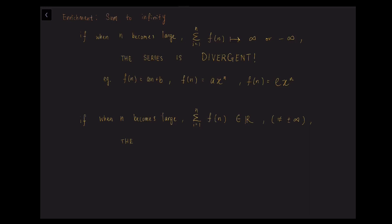On the other hand, if when n becomes large the summation gives a finite real number — not positive or negative infinity — then we conclude the series is convergent, as the numbers get smaller and smaller and sum to a finite value. For example, f(n) equals a over n plus b: as n increases, the a over n term decreases, eventually reaching a finite value. Similarly, a times x to the power of negative n is an exponential term that decreases exponentially, so we get a finite value.